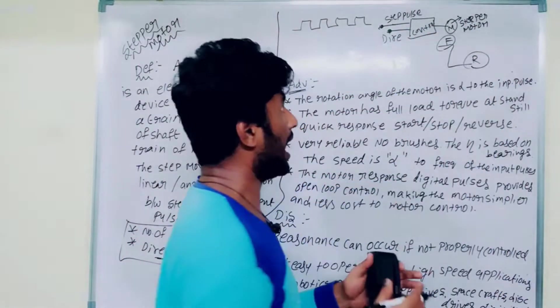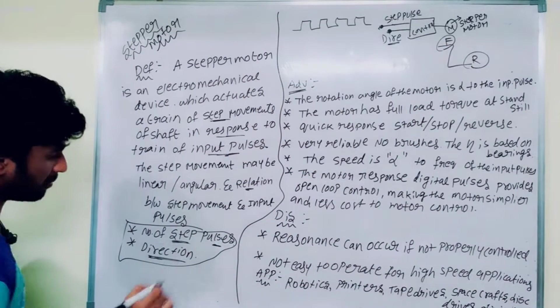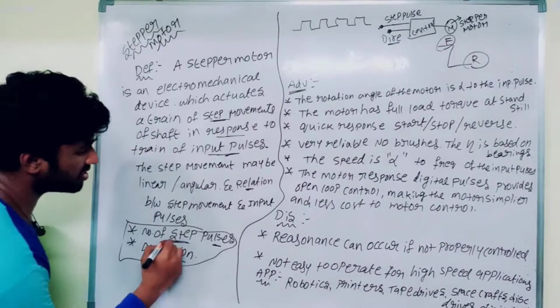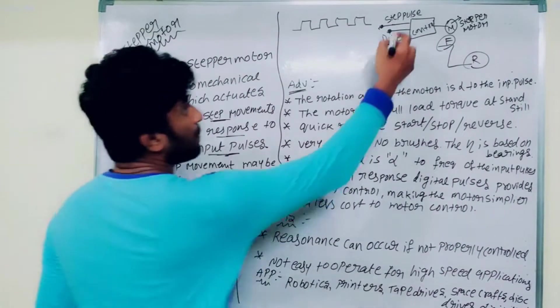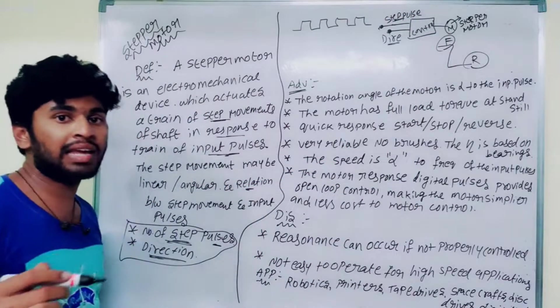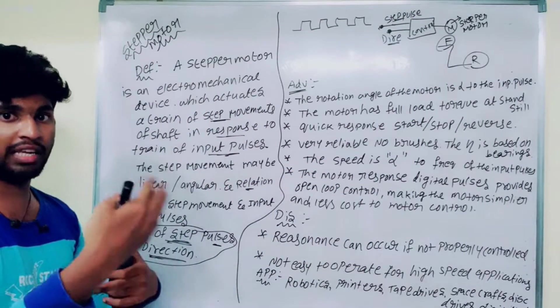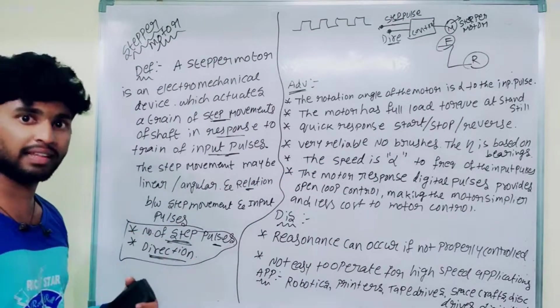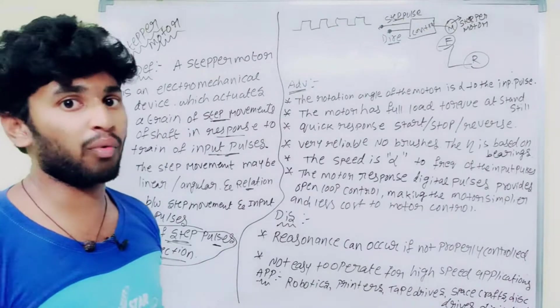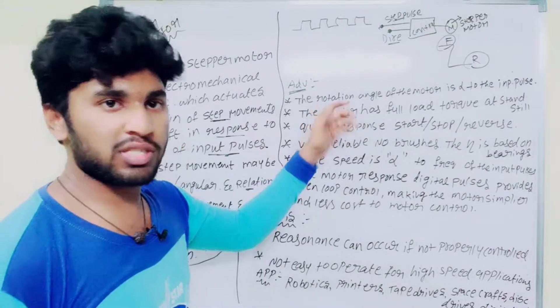The direction determines forward and reverse. The step angle is the step angle — the step angle is the move point. The step angle determines where you start and where you stop. We have now mentioned the advantages and disadvantages.